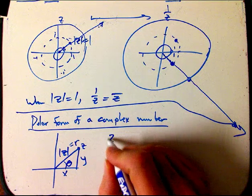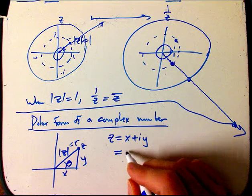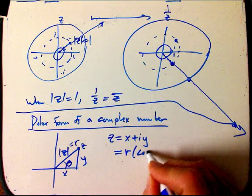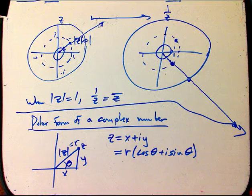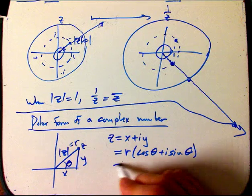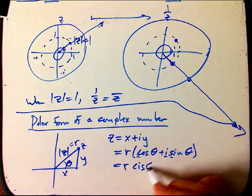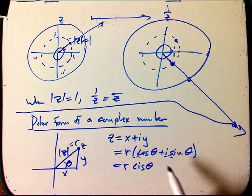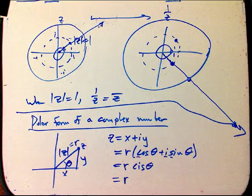And so if I have z equals x plus iy, it's often interesting to look at that as r times the quantity cosine theta plus i sine theta. And there's an abbreviation sometimes people use, cis, cis theta.